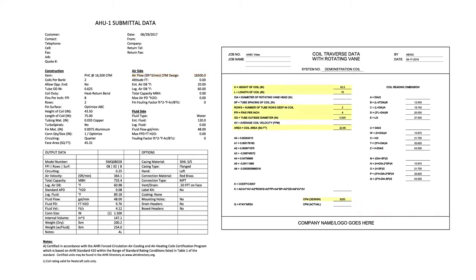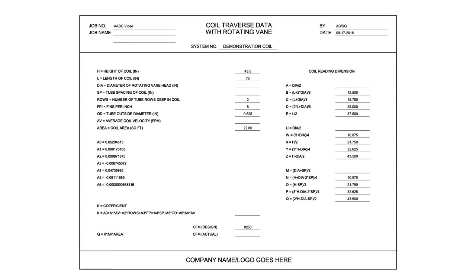The coil traverse data with rotating vane form has been populated with the AHU-1 submittal data. Next is to verify the submittal data while in the field and to complete the form by measuring the diameter of the rotating vane head and tube spacing of the coil. Then the coil reading dimension data on the right will be automatically calculated, and this data will be used to measure and mark the coil for the standard and offset velocity reading locations.